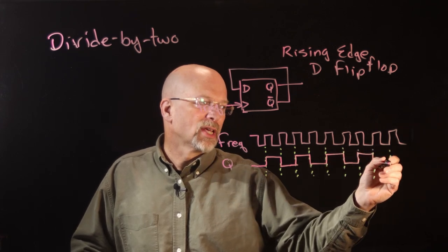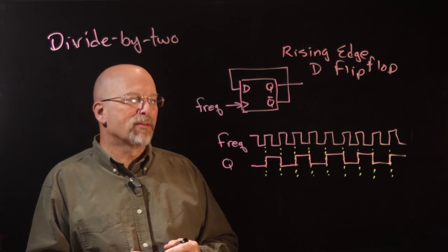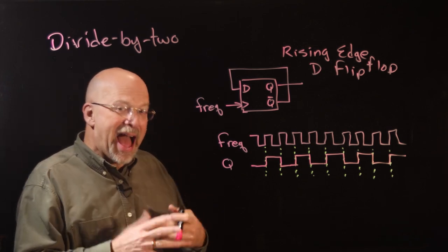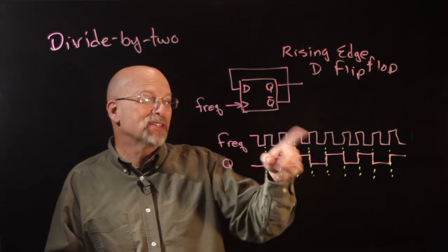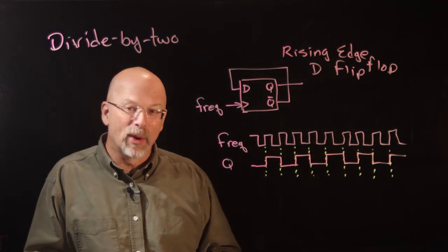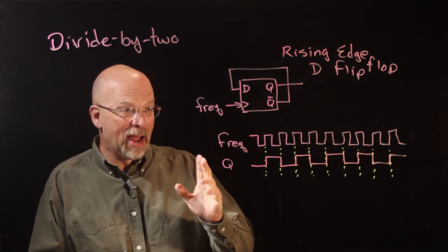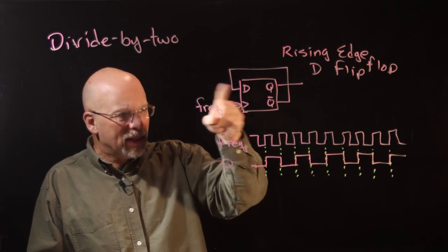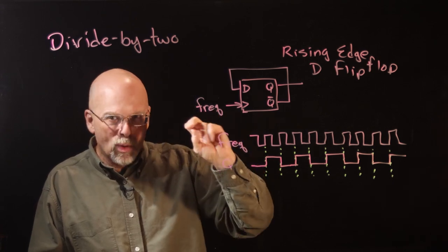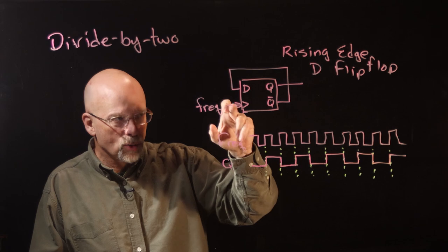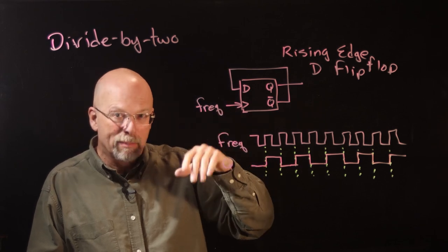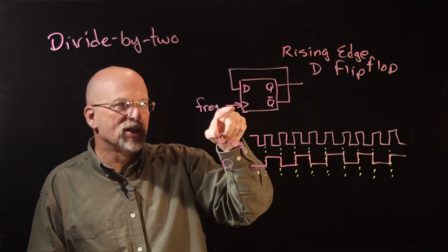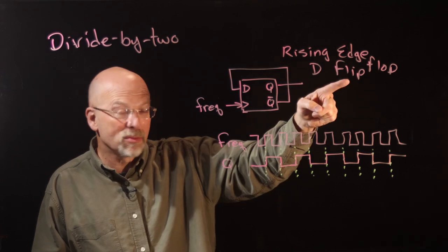And as you see, you get a waveform that is half, it's pulsing half as fast as the frequency that's going into the clock input. Now, it seems kind of funny, but that frequency is going to be what's driving the changes. So that has to go into that driving input, the one that's causing the changes, which is that clock. Now, it has to be a flip-flop.